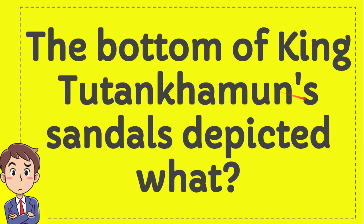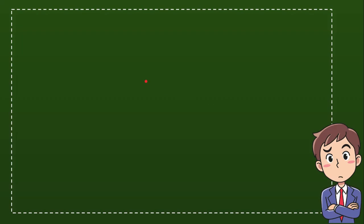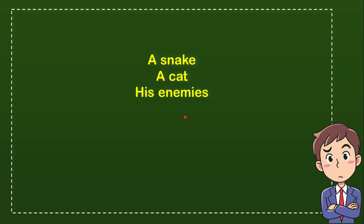What was depicted on the bottom of King Tutankhamun's sandals? We'll give you four options: the first option is a snake, the second option is a cat, the third option is his enemies, and the last option is his daughters. From these four options, which one do you think is the correct answer?